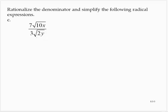All right. So the irrational part of the denominator is that square root of 2y. So I'm going to multiply by it. I don't need to multiply by the 3.